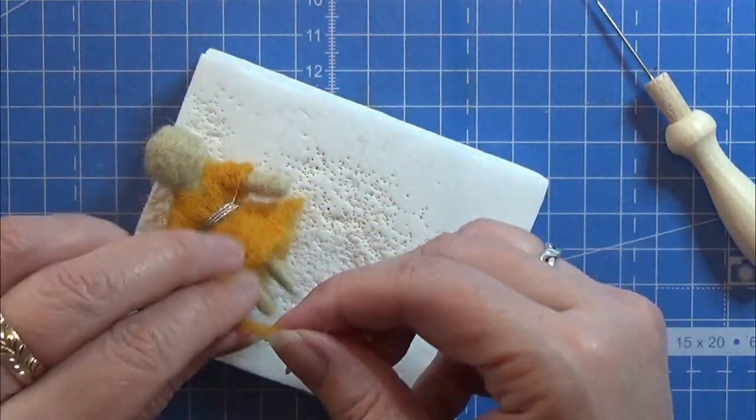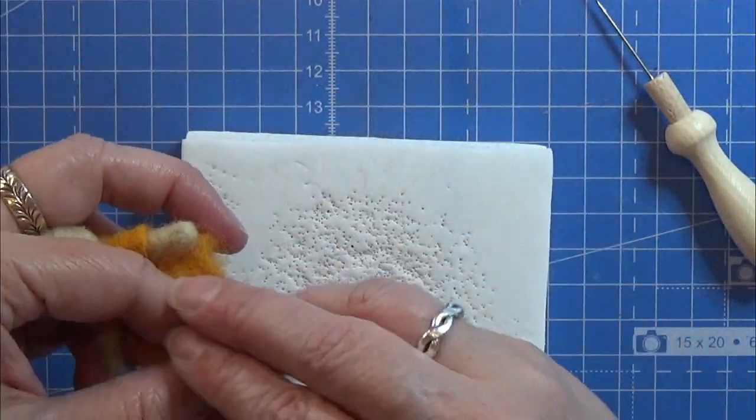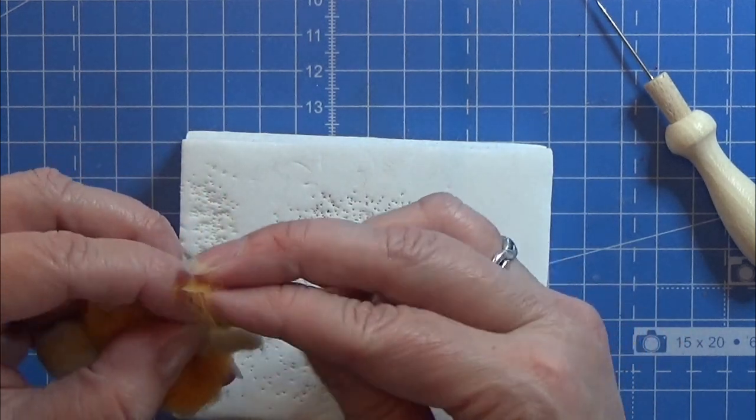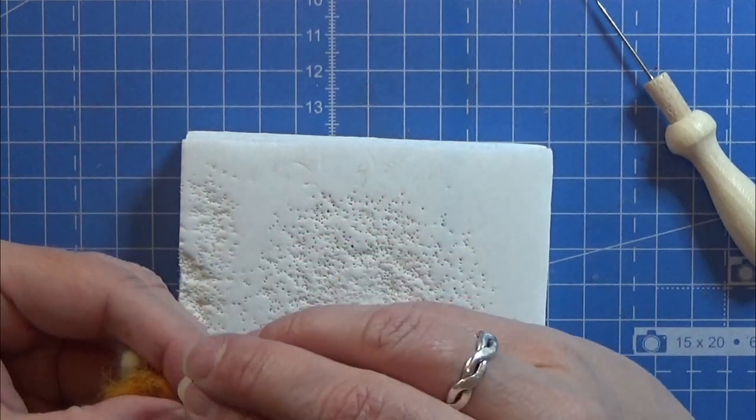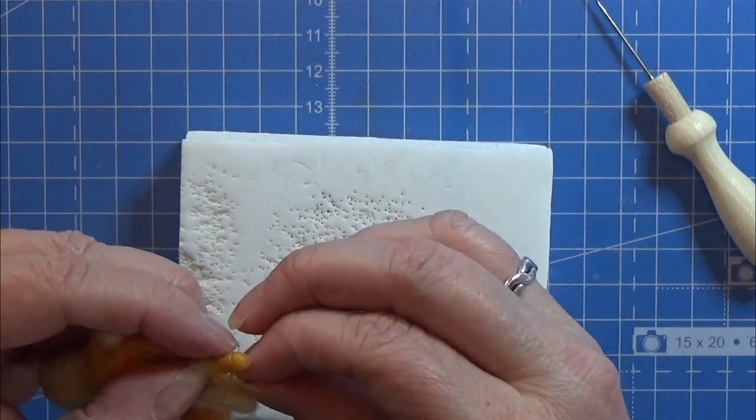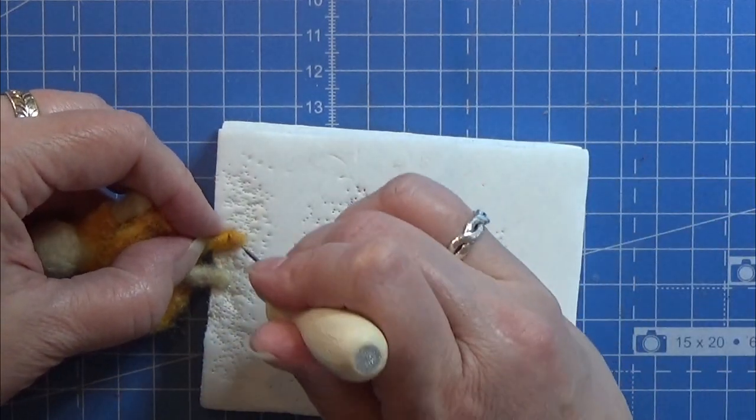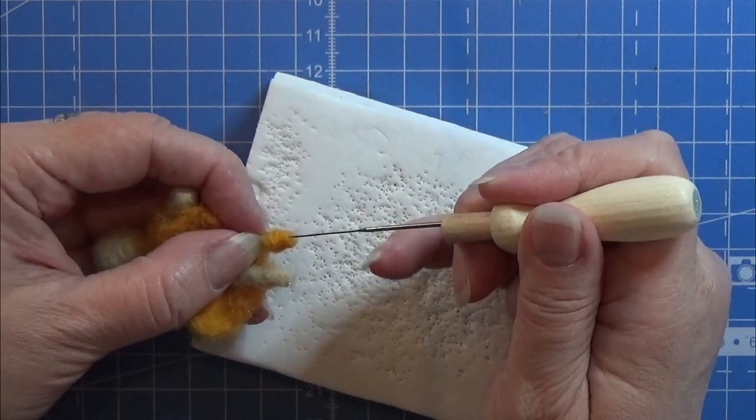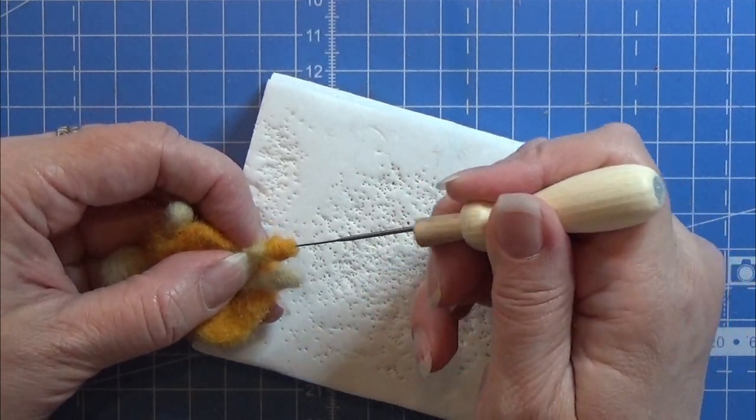Then I take a tiny piece of wool and wrap it around the foot for a little shoe, and I'm needle felting that to the body or the leg. It's a bit tricky, but the result is really worth it, and I'm doing this on both her feet.